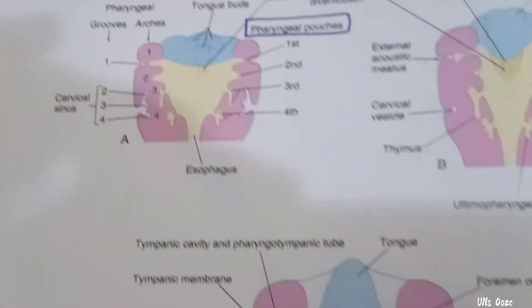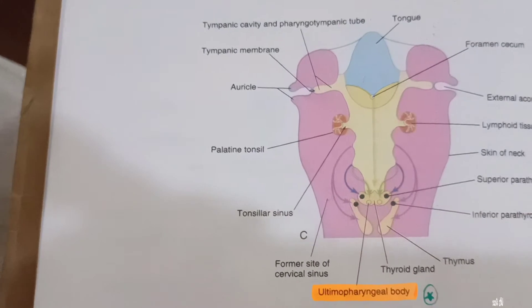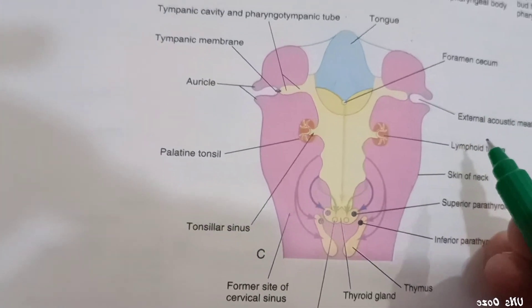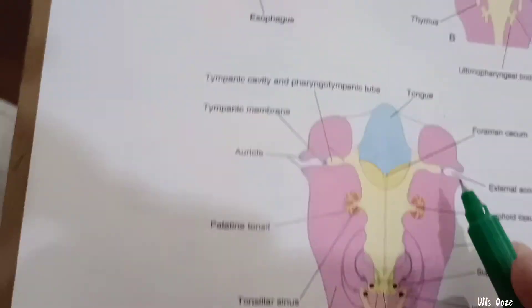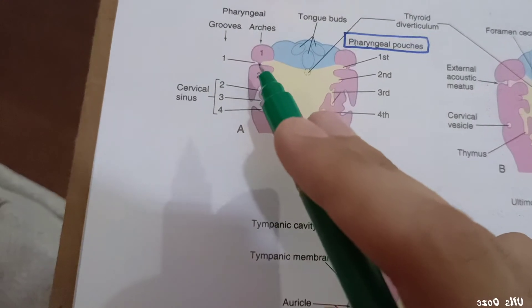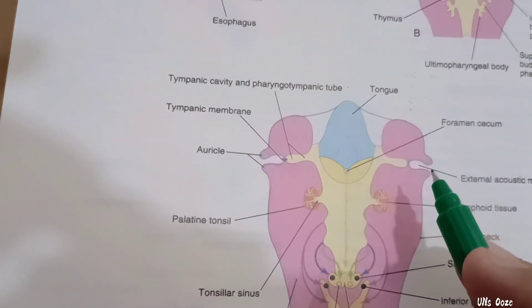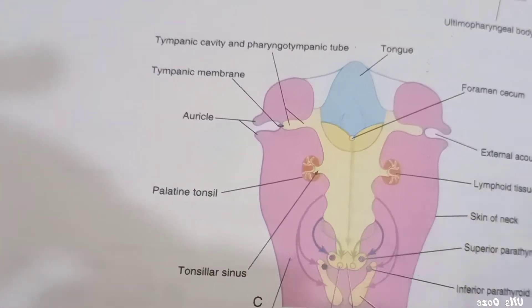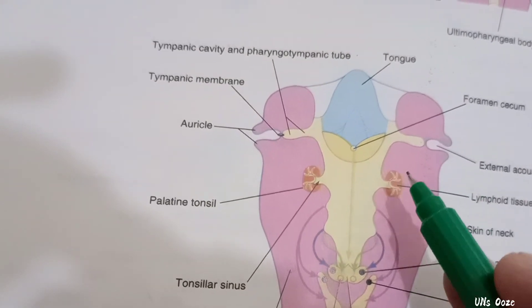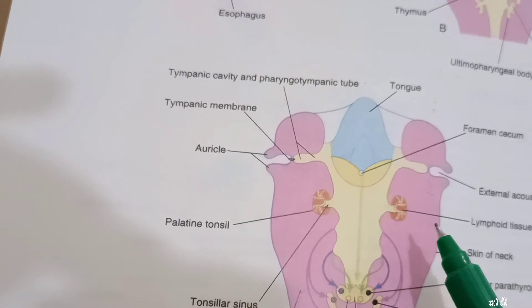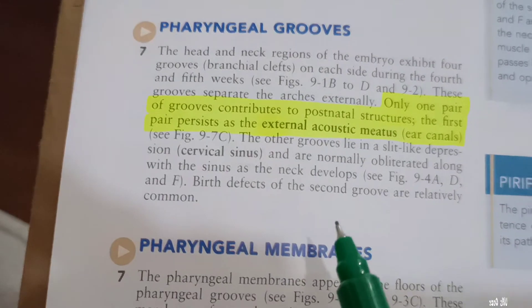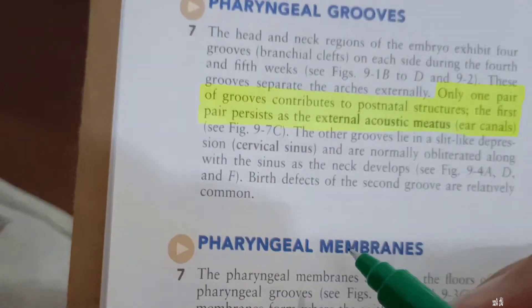Like and share. The first pharyngeal groove gives rise to the external acoustic meatus. The other grooves do not contribute to development. Defects of the second groove are relatively common.